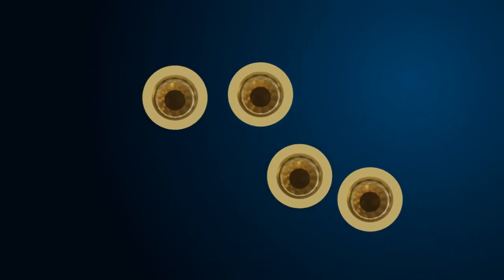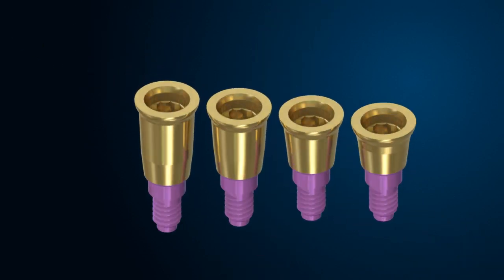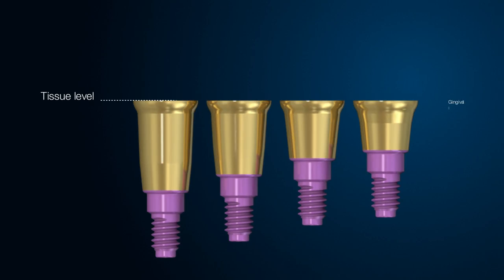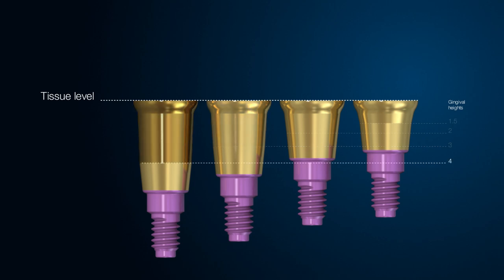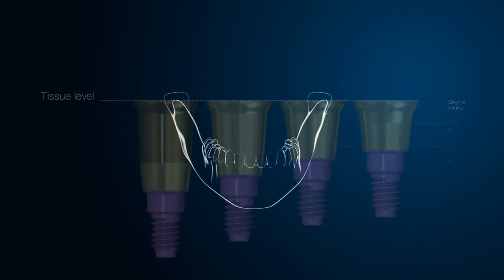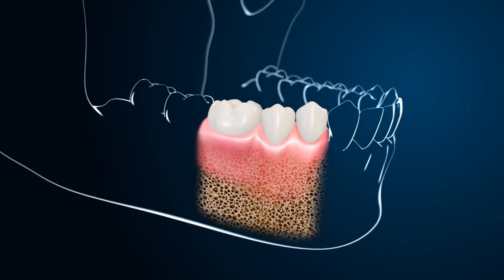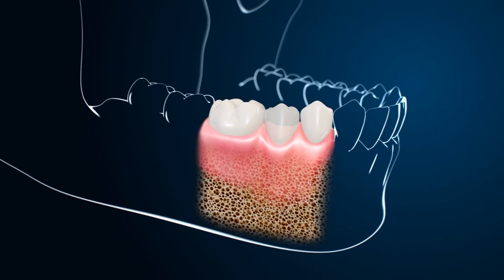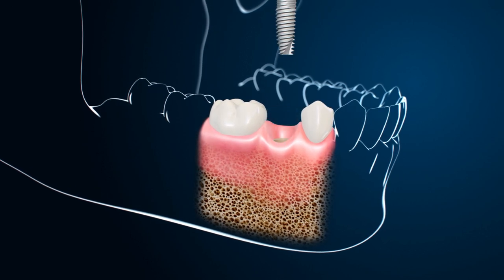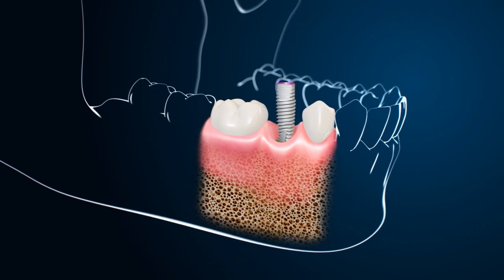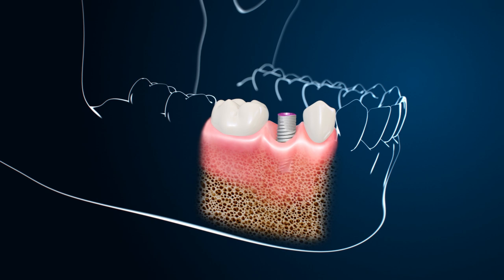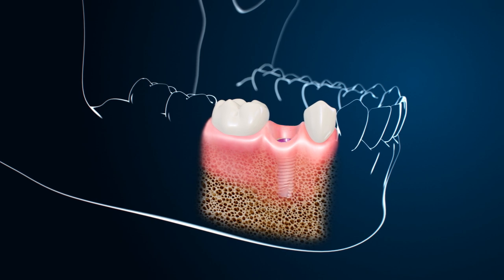The MIS Connect system features an intragingival narrow and modular abutment, designed with a low profile providing a tissue level solution for various gingival heights. Connect is a stay-in abutment system which enables the entire prosthetic procedure and restoration to occur above the connective tissue level.